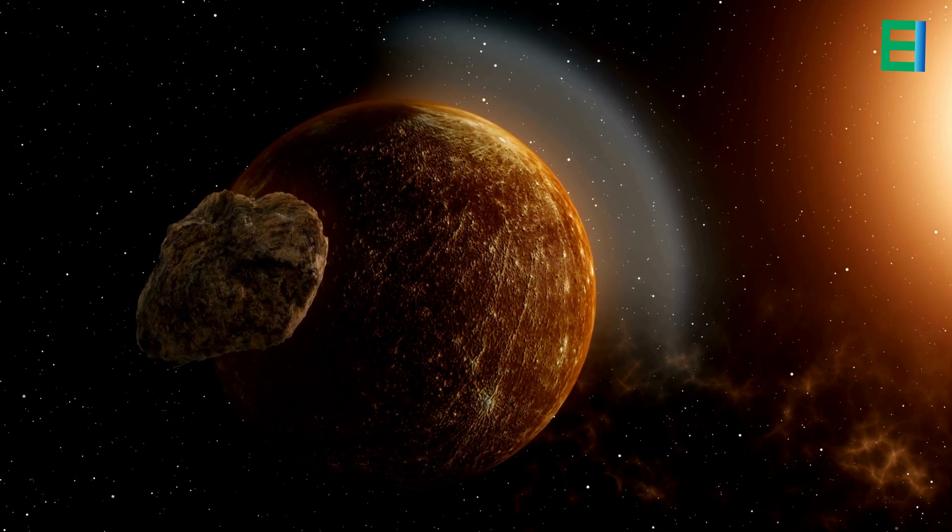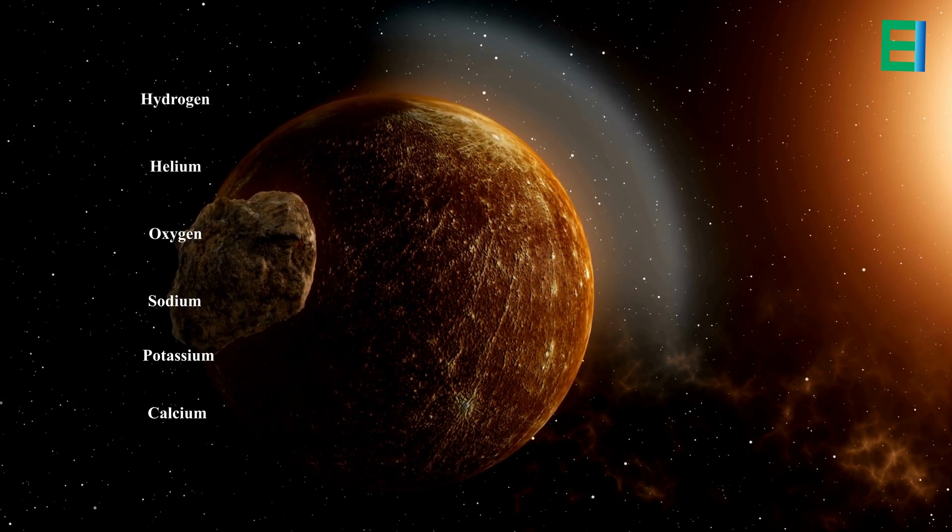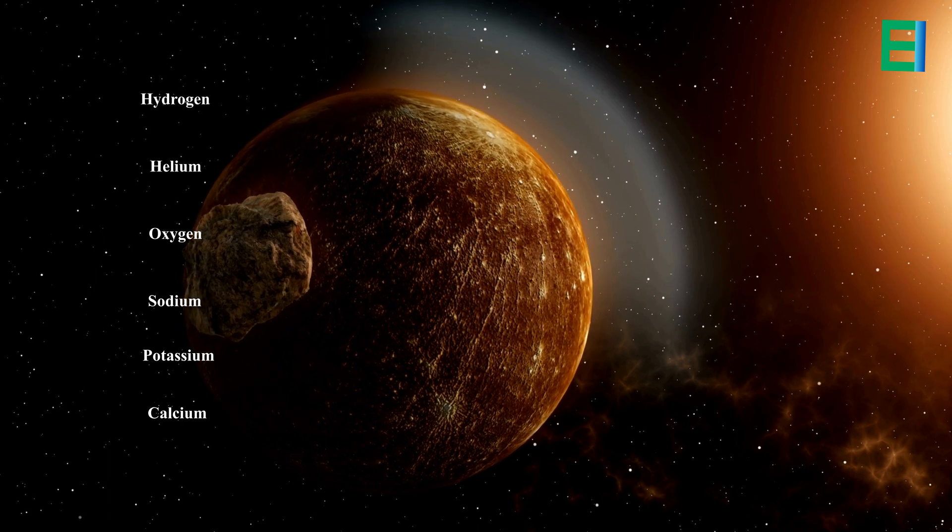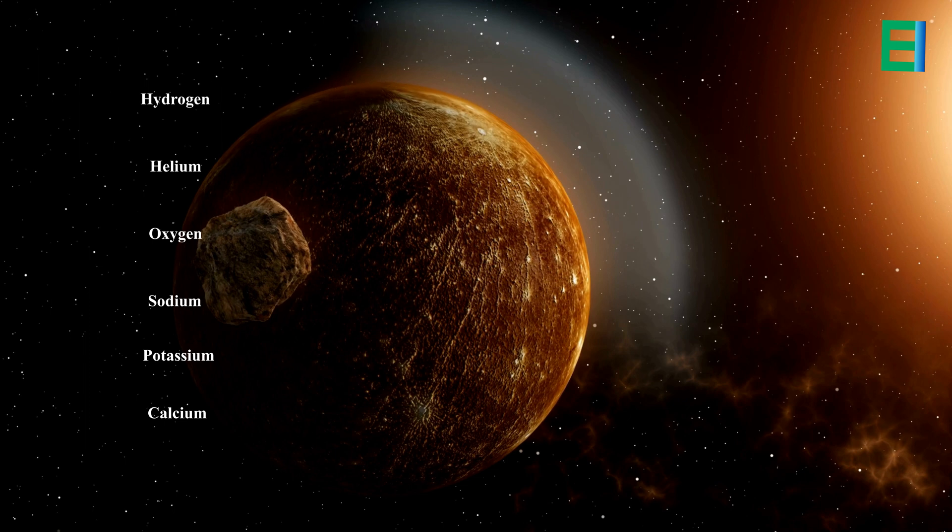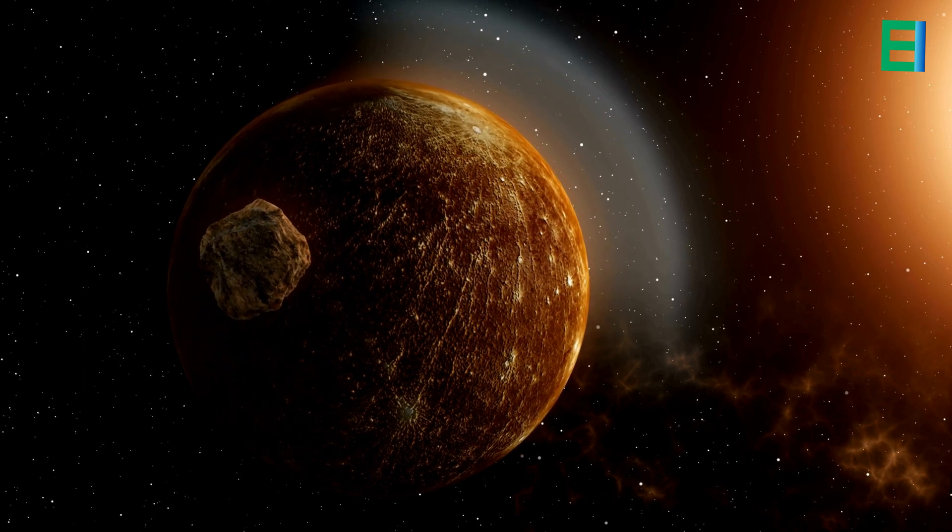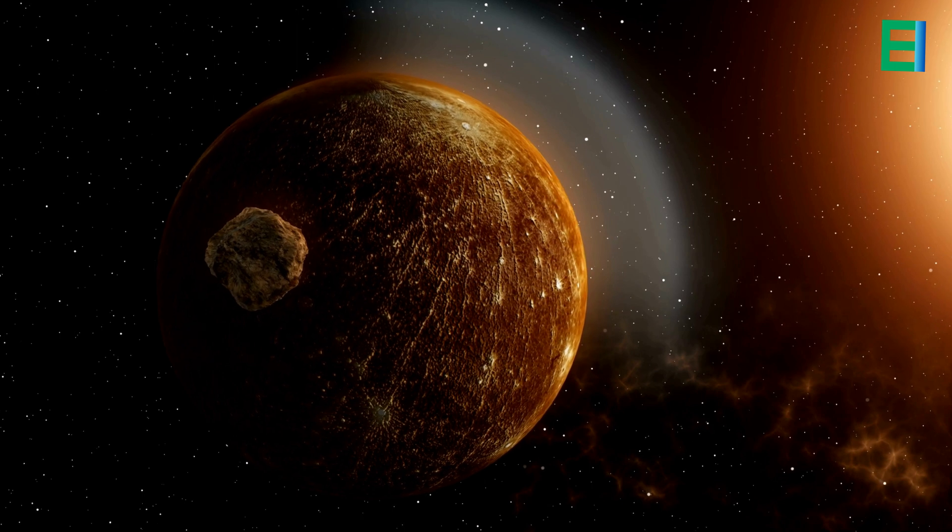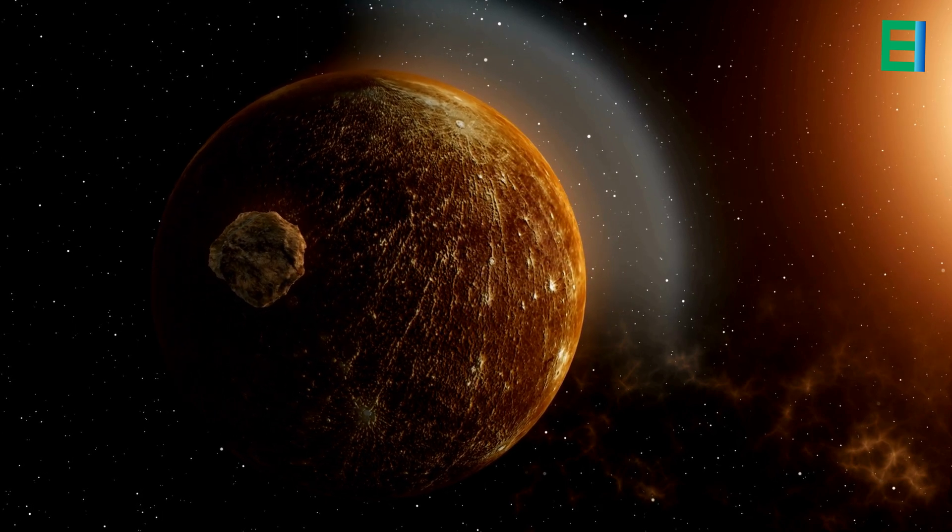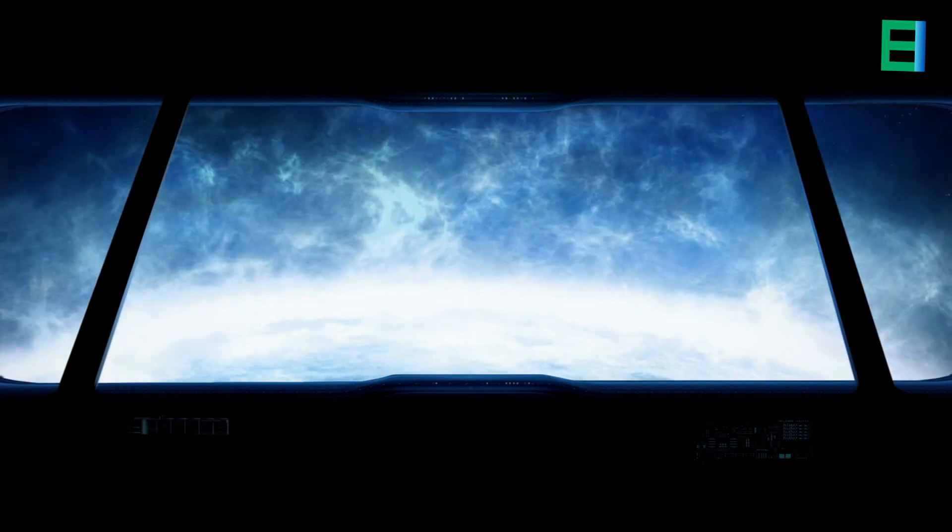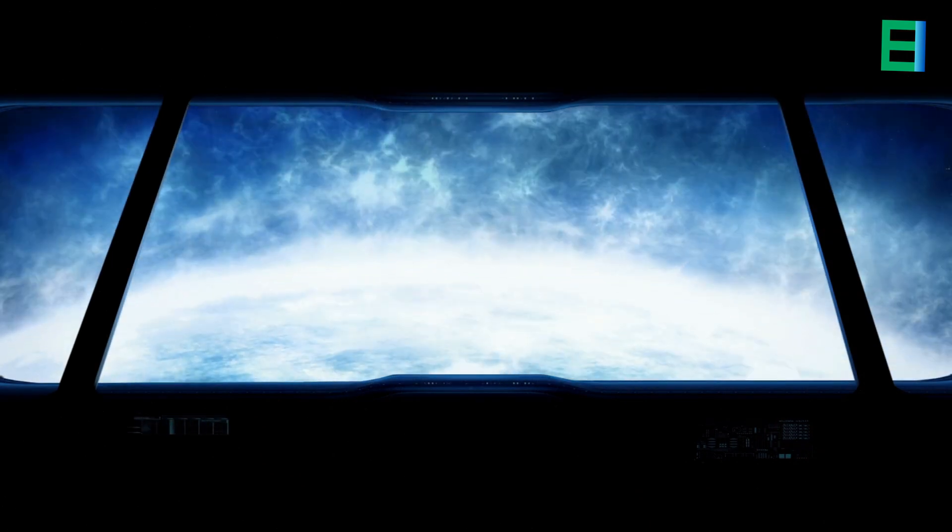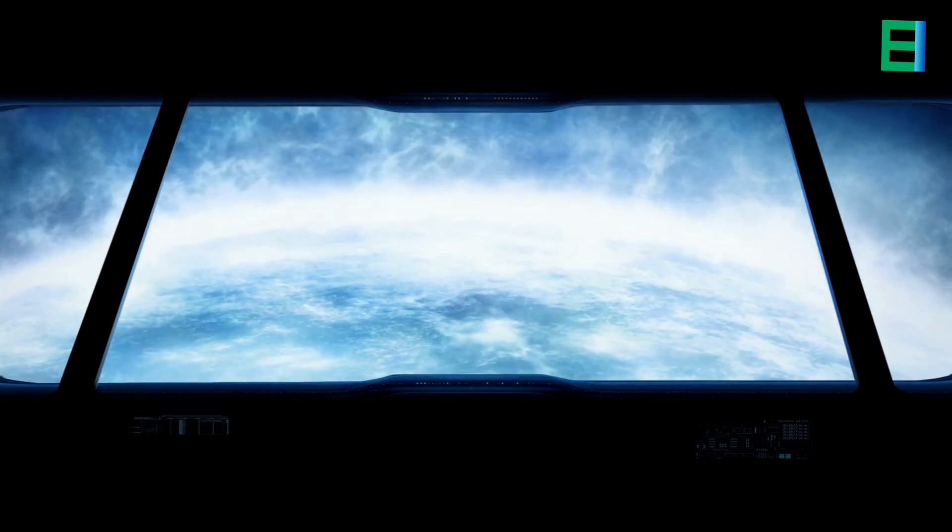The exosphere of Mercury primarily contains elements such as hydrogen, helium, oxygen, sodium, potassium, and calcium. These elements are present in very low concentrations, and their individual densities can vary depending on factors like location and time. The exosphere is characterized by extremely low atmospheric pressure, making it unable to retain gases for an extended period.